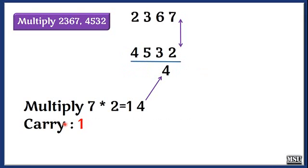To do that, the first step, we are going to multiply the rightmost bit as usual. So 7 into 2, the result is 14. I am writing 4 here and carry is 1.